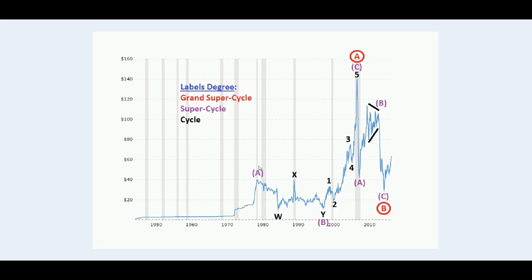Obviously we have a rise here, which was the start of the grand supercycle within supercycle A (purple), and then the contraction which of course took longer time. Typically for supercycle wave B, it contracted within a complex structure — WXY — followed by of course the strongest move of all: the C wave.